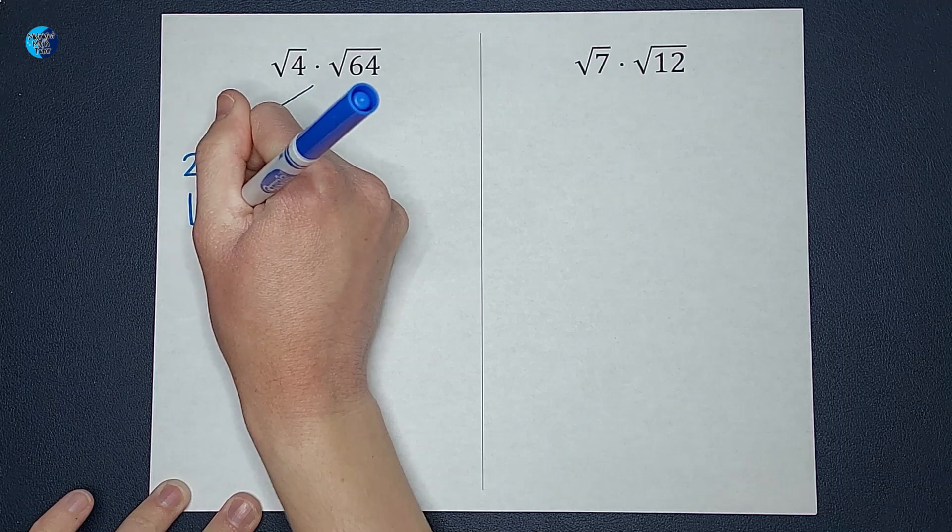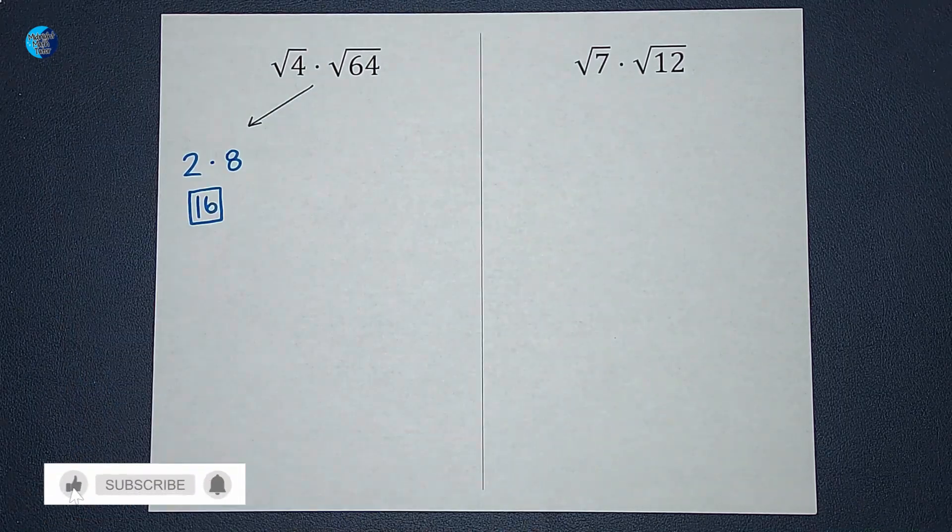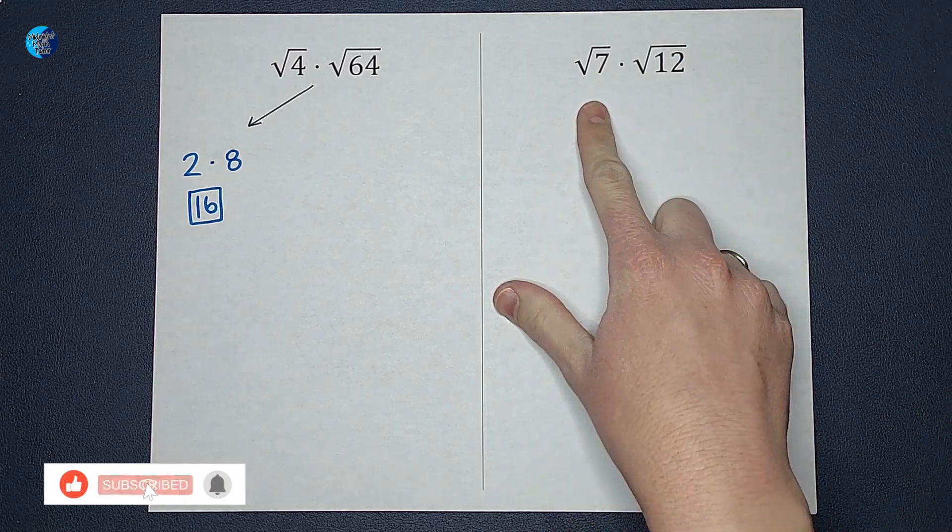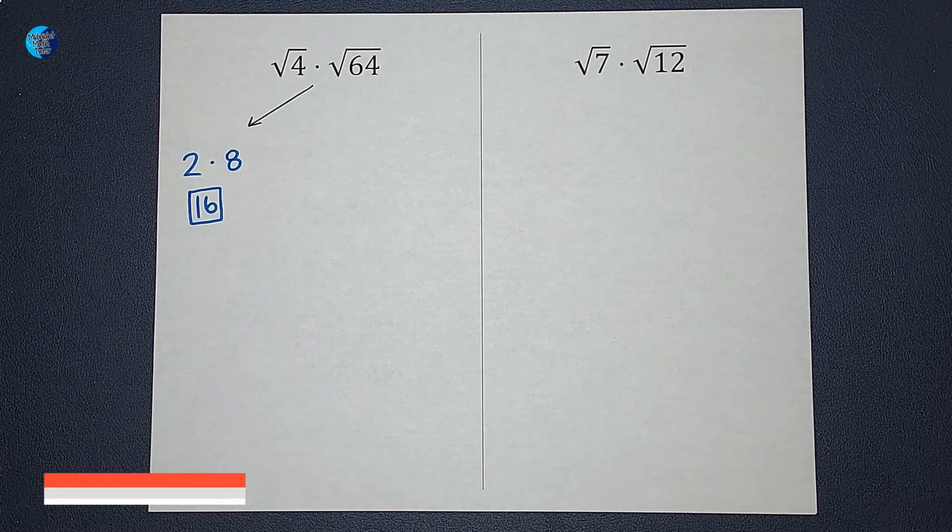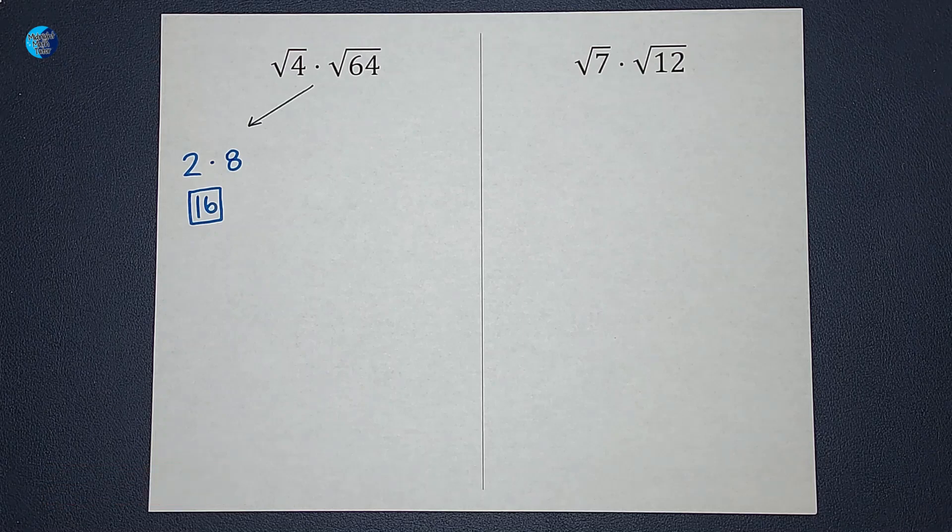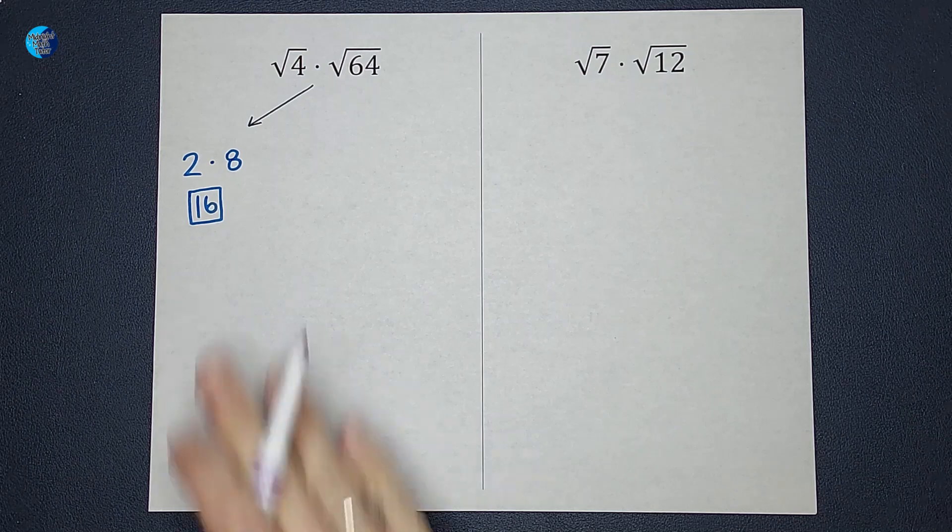But it's not always nice square roots, right? Sometimes it's the square root of 7, and I don't know what that is without a calculator, so what am I supposed to do? What do we do when it's square roots that aren't nice numbers like over here?